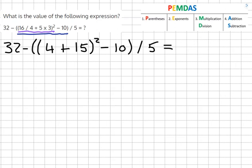And from here we'll continue with the inner parentheses and do 32 minus 4 plus 15 equals 19 squared minus 10 over 5.